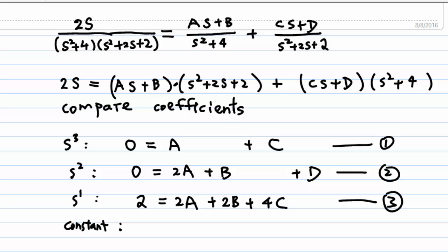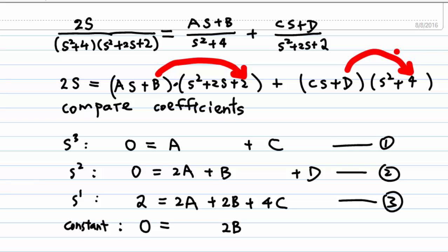Finally, let's compare the constant terms. On the left-hand side, there is no constant term, so we write 0. On the right-hand side, the constant term comes from b times 2, giving 2b, and another constant term from d times 4, giving 4d. So equation 4 is: 0 = 2b + 4d.